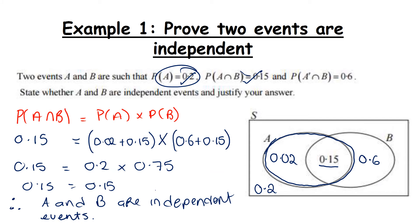Let's take a quick example. Two events A and B are such that the probability of A is 0.2, the probability of A intersection B is 0.15, and the probability of A complement intersection B is 0.6. They want us to state whether A and B are independent events and justify the answer. We need to fill in this Venn diagram. The probability of A — the full circle — has to be 0.2. There's already 0.15, so there must be only 0.05 left on the other side.